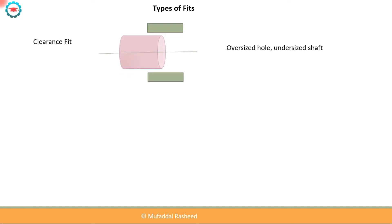The first is the clearance fit. A clearance fit is when we have an oversized hole and an undersized shaft — the shaft is much smaller than the hole — so when the shaft is inserted inside the hole there is some amount of clearance. An example would be the pin in the pin joint of a hinge, where that pin should have some clearance with respect to the hole.